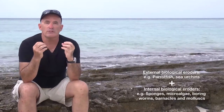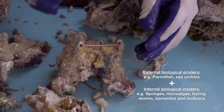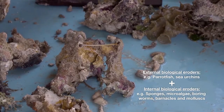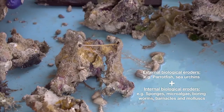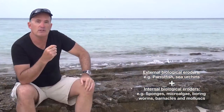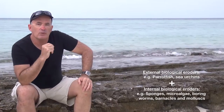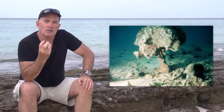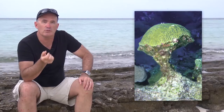In addition to external bio-eroding organisms, there are a large range of algae and invertebrates that like to bore into living and dead calcium carbonate skeletons. In this regard, there are microalgae, sponges, worms, barnacles and mollusks that use a range of different techniques to bore into the skeletons of corals and other calcifying organisms. This directly reduces the structural integrity of coral skeletons, leading to their eventual removal from the reef by storms.